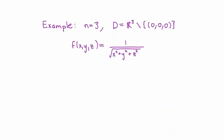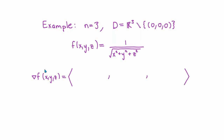Now let's look at an example. Let's take the scalar field in three dimensions defined by F(x, y, z) = 1 / √(x² + y² + z²). This function is not defined at the origin, so I have to remove that point from the domain, but the resulting set D is still an open set. The gradient of this function is a vector field — it takes in a point (x, y, z) from D and outputs a vector in V3.